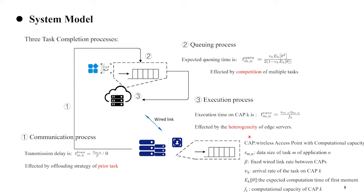In our scenario, the goal of computation offloading is to minimize the average delay of the applications by uploading different sequential tasks from mobile devices to edge servers. We introduce our cost model where the process of each task consists of three parts: communication, queuing, and execution.